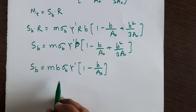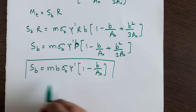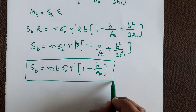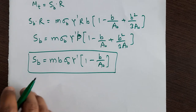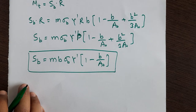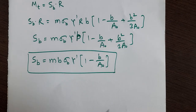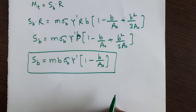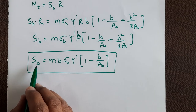This is the final equation of beam strength for the bevel gear, and this equation is called the Lewis equation — the Lewis equation for bevel gears. Here Sb is the beam strength of the tooth.